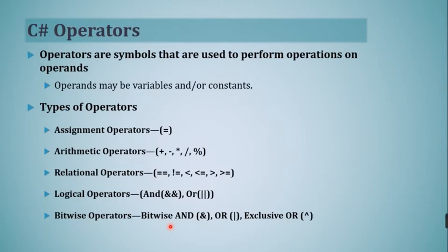Types of operators: Number 1 is the assignment operator. The equal symbol is used for the assignment operator. It assigns the value of the right-hand side to the left-hand side. In coming lectures we will use and check the use of the assignment operator. Similarly, the next type is arithmetic operators.